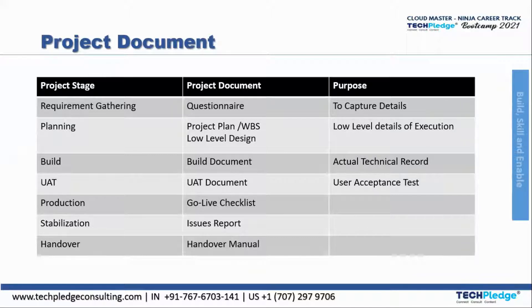When you go into production, a go-live checklist comes into picture. There will be a checklist covering what things are happening, what things are done, what needs to be changed, and what is happening in the live production environment. So there will be a checklist when you go live.